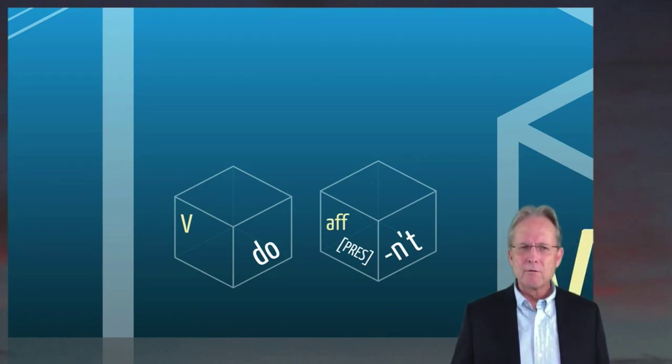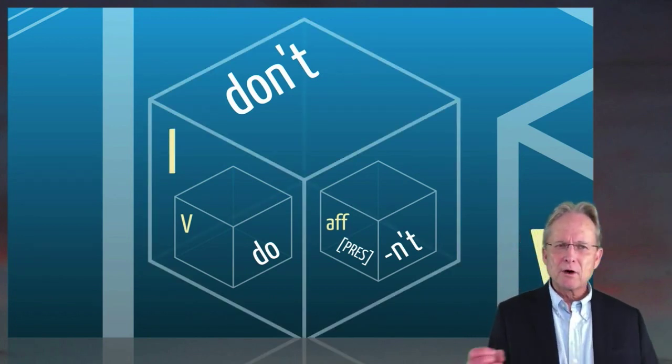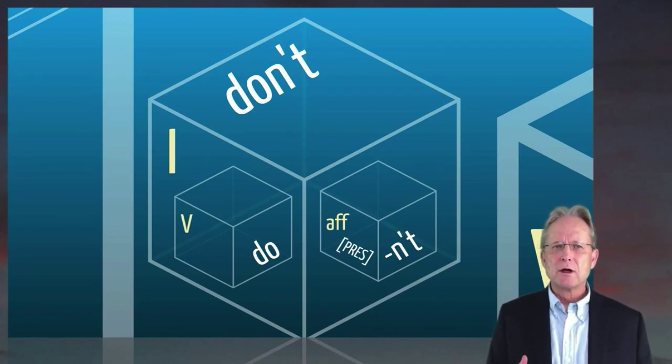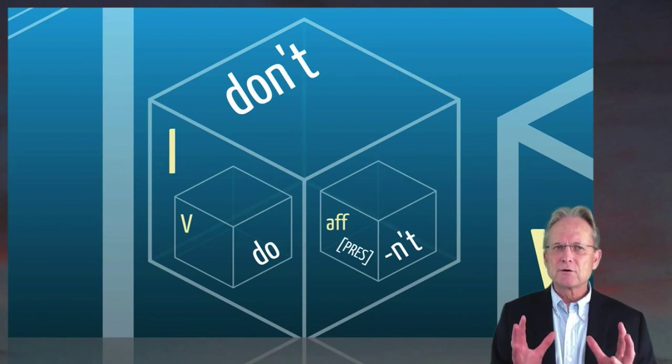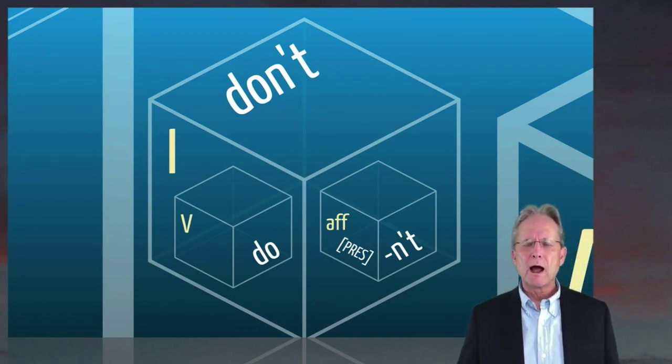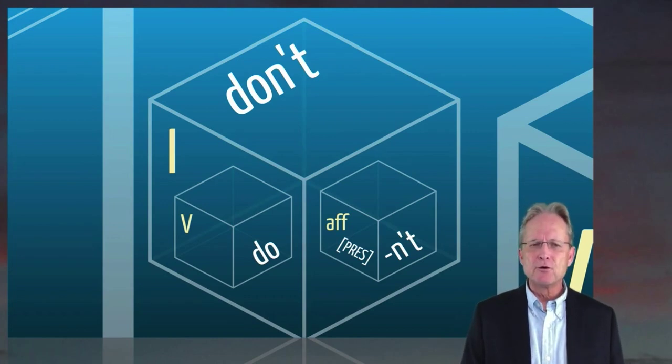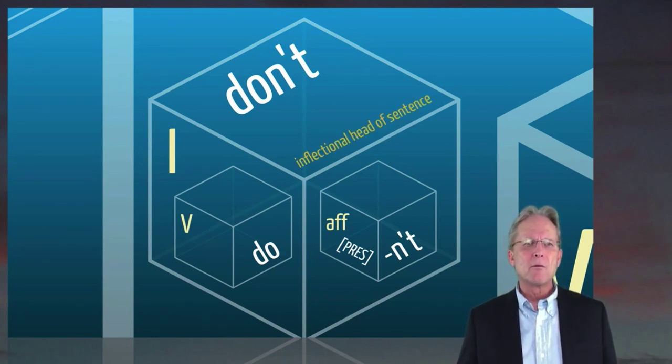So here we have the verb do, which is an auxiliary verb. So auxiliary verbs can be added to sentences. And when they are, they're the ones that are going to take, they're going to, the ones that are going to combine with the other inflectional morphology. So present tense plus unt meaning not are the affixal inflectional morphology that's here. That combines with the verb do to give us, because of allomorphy, the form don't. Allomorphy and alternation. So this is an alternation between do and do. Do shows up with unt. That's the form of do that shows up in that case.